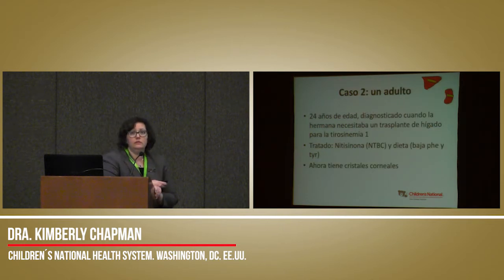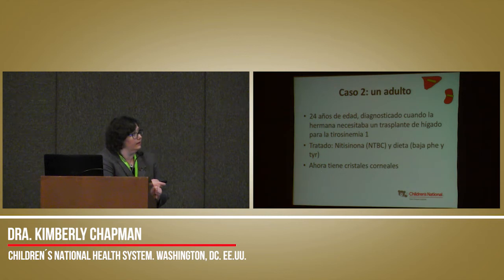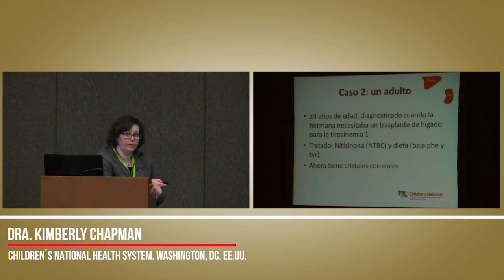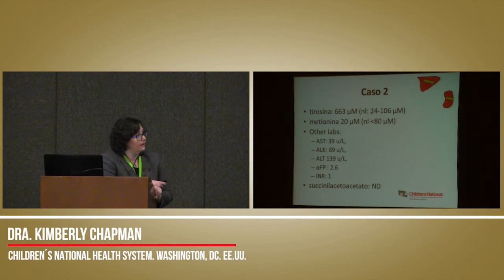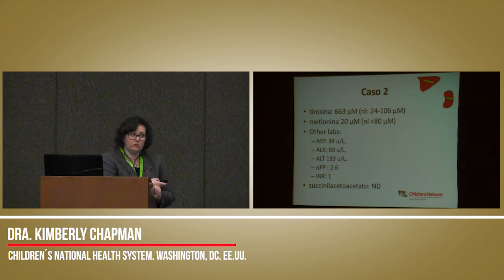For an adult case: a 24-year-old gentleman was identified when his sister received a transplant due to hepatocellular carcinoma. He is supposed to be on NTBC and diet but is not compliant with diet, though better with the medication. He has corneal crystals, which are fairly painful and cause photophobia. The lower we can drop his tyrosine, the better. At his last visit his tyrosine was 663 micromolar, with very few liver findings, though alpha-fetoprotein continues to climb. We cannot detect succinylacetoacetate, confirming he is taking the drug despite poor dietary compliance. He was started on treatment at approximately six years of age.